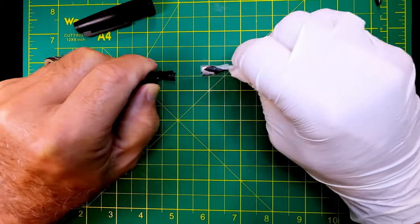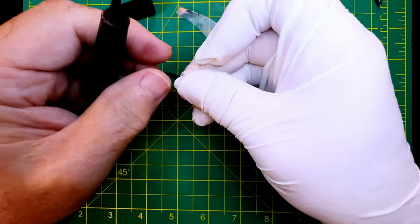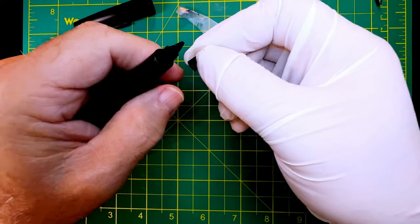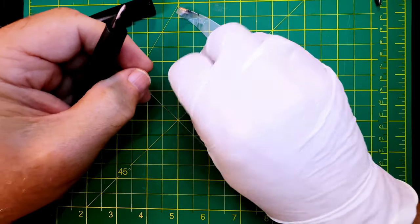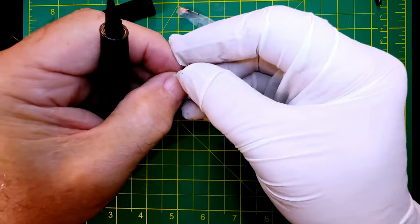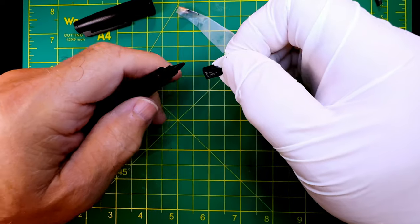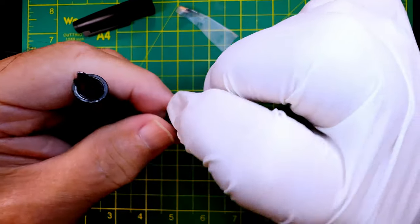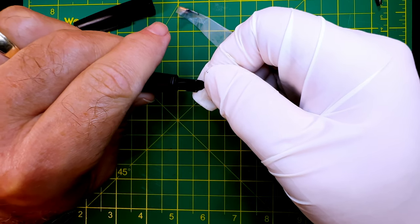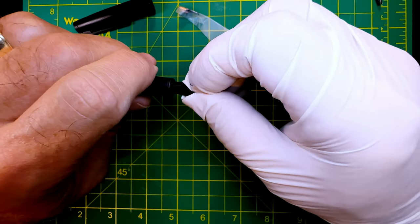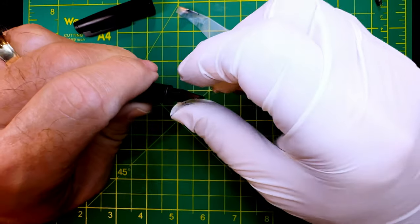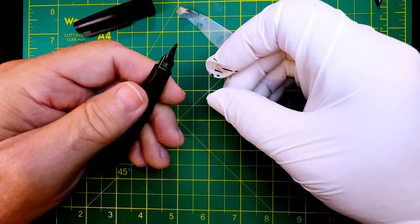Now let's put the Lamy cursive nib on there. I hope it writes well because I think it's going to look sharp. So we just line up the rails with the rails on the feed, give it a little bit of a start, and then give it a push just like that. We're going to give it a moment.